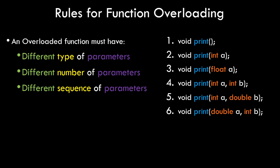To illustrate, we have six different cases of overloaded functions. Case one is 'void print()' with no parameters. Case two is 'print(int)' — same function name but passing an integer. Case three passes a different type, satisfying the 'different type of parameters' condition. Cases two and three illustrate different types, while cases one and two illustrate different numbers of parameters — zero vs. one integer parameter.